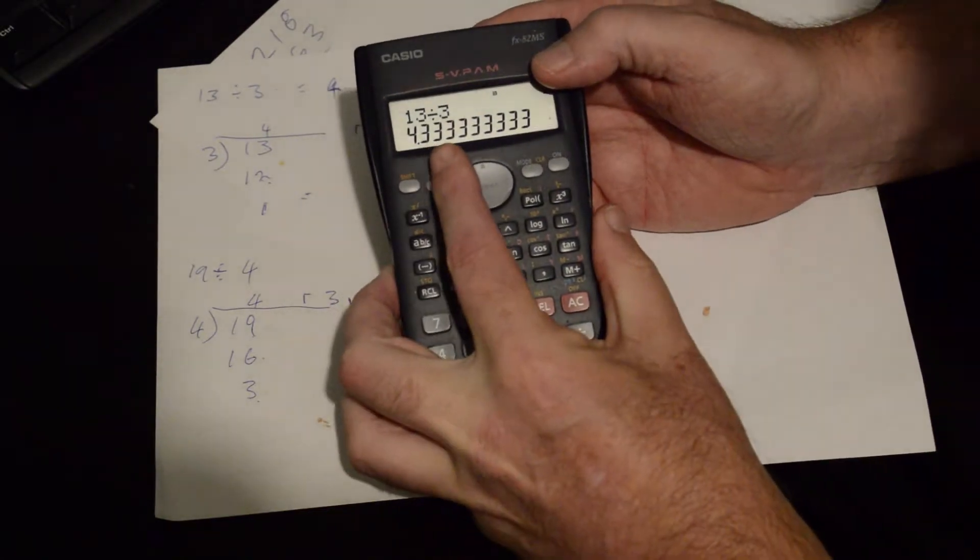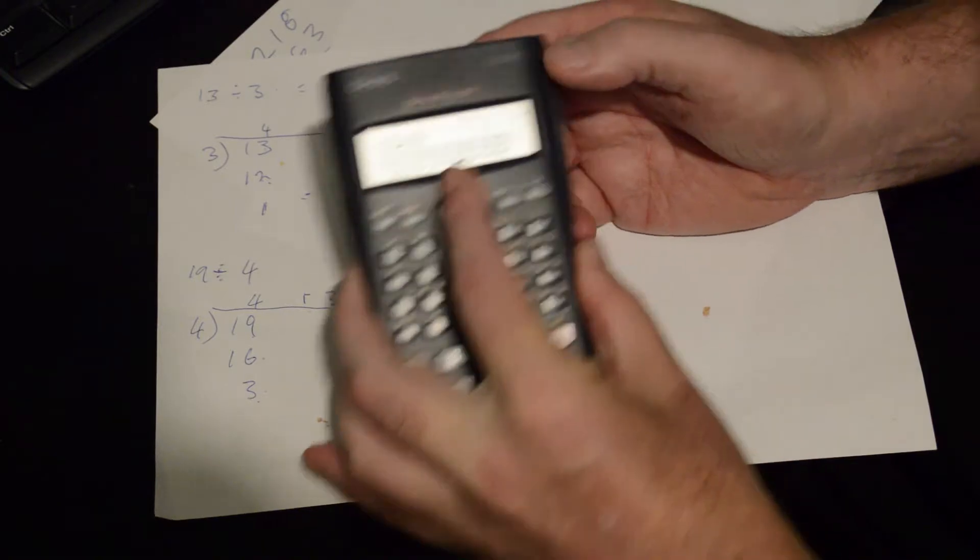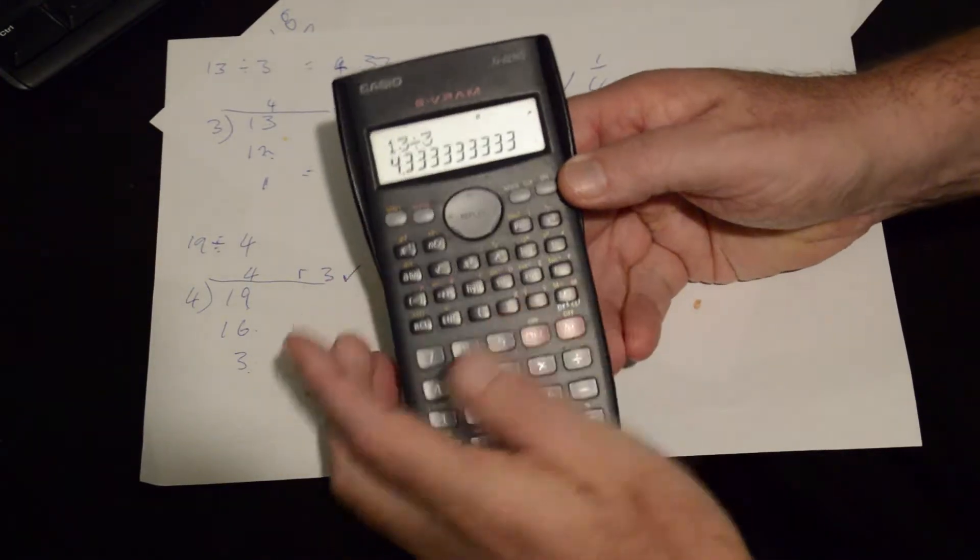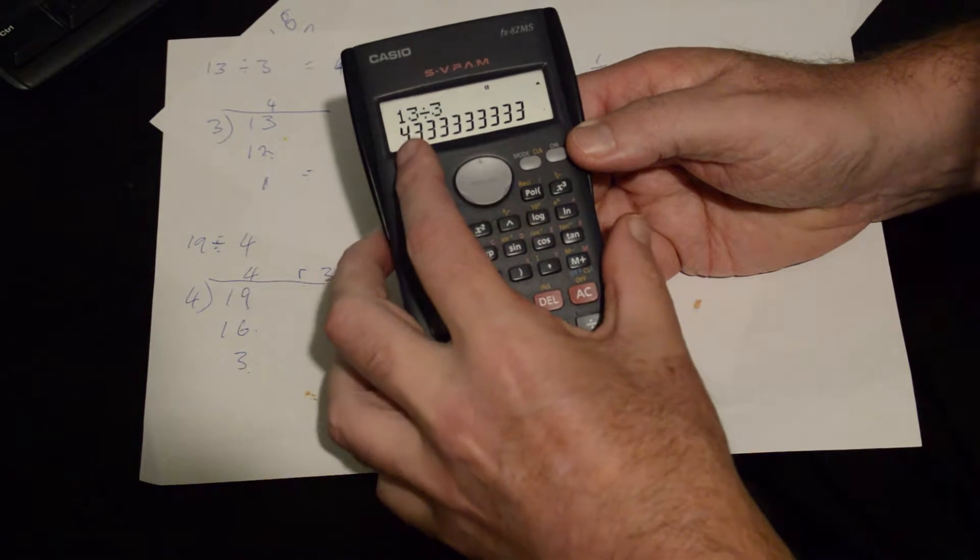So now we've got 4.3333, you've got 3 repeat. It's not giving you a remainder. So the other way to get that remainder is firstly you have to take away the 4.